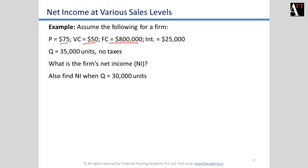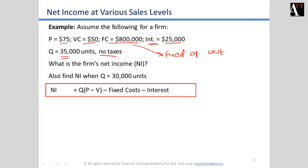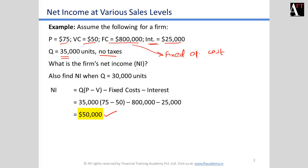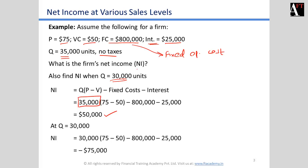Now let's see how this impacts net income. With the same price and variable cost, the fixed operating cost is $800,000 and interest expense is $25,000 separately. At a quantity of 35,000 units with no taxes, net income equals quantity multiplied by contribution per unit minus fixed operating cost minus interest expense, giving a net income of $50,000. Replacing 35,000 units with 30,000 units results in a net loss of $75,000.